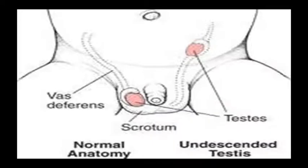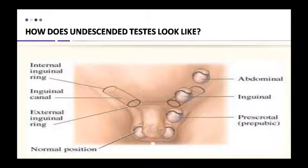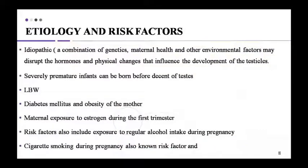In some cases, one testis descends normally while the other remains in the abdominal cavity. The undescended testis is the abnormal condition. The descent normally passes through the internal inguinal ring, through the inguinal canal, to the pre-scrotal or pre-pubic stage, and finally descends. If this process fails, it is the condition of cryptorchidism.